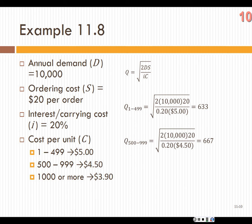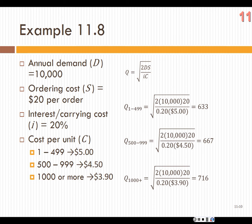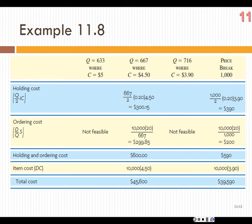For 1,000+ units at $3.90: EOQ = sqrt(2 × 10,000 × $20 / (20% × $3.90)) = 716. Is that feasible? It's not — my EOQ is 716, but I have to order at least 1,000 to get that price. So it's not in the feasible solution space. Instead, I calculate what happens if I order the minimum of 1,000 units and evaluate that cost as well.